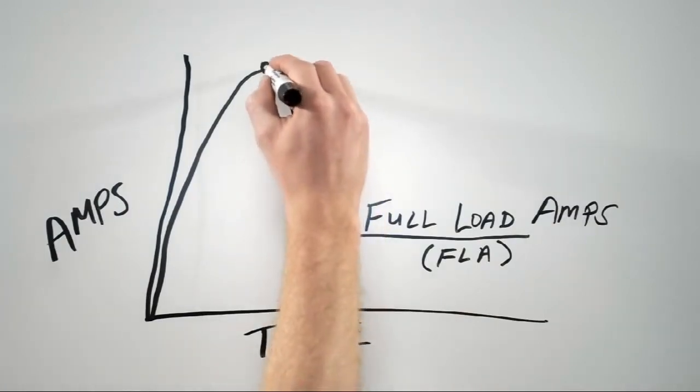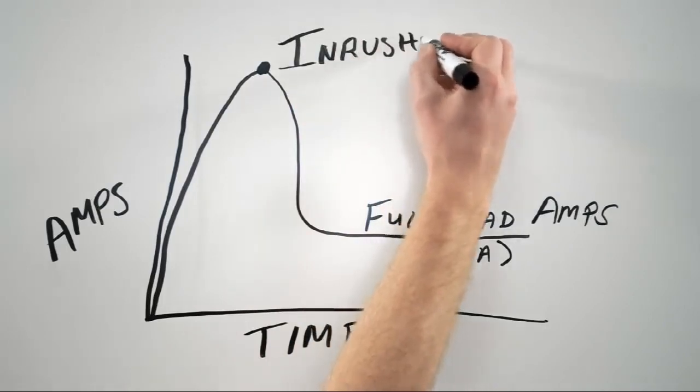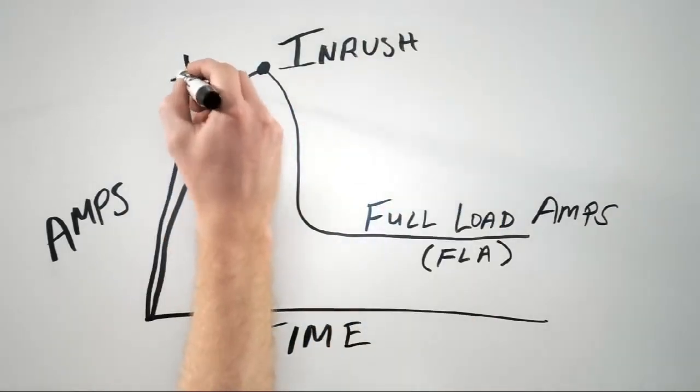That big spike of current you get when you start the motor is called inrush. Inrush is usually about 6 to 8 times the full load amps of the motor.